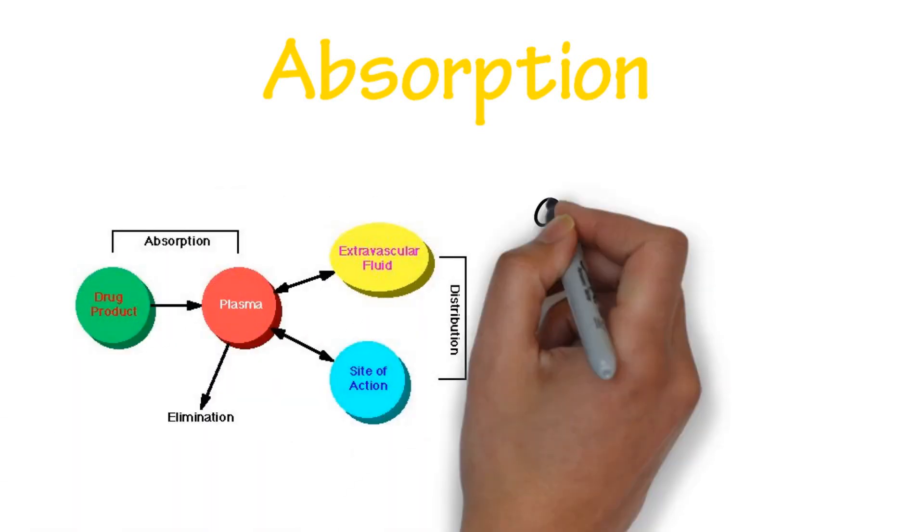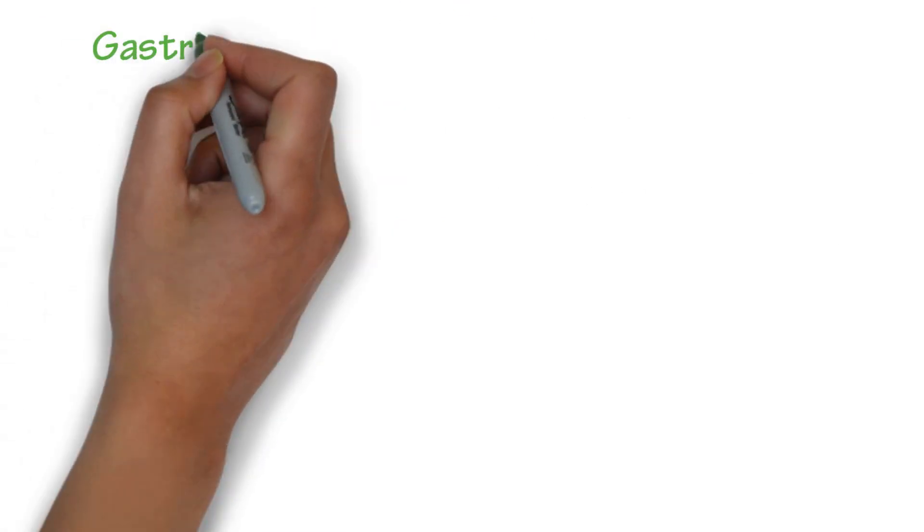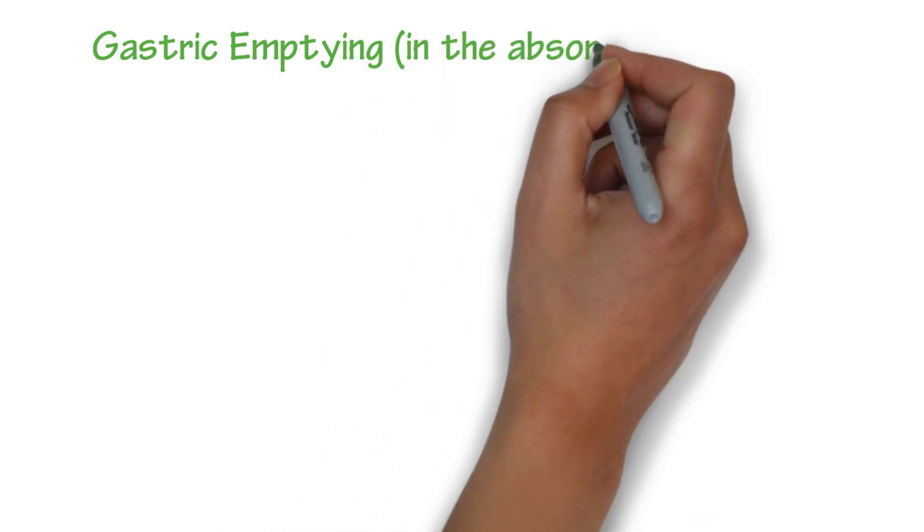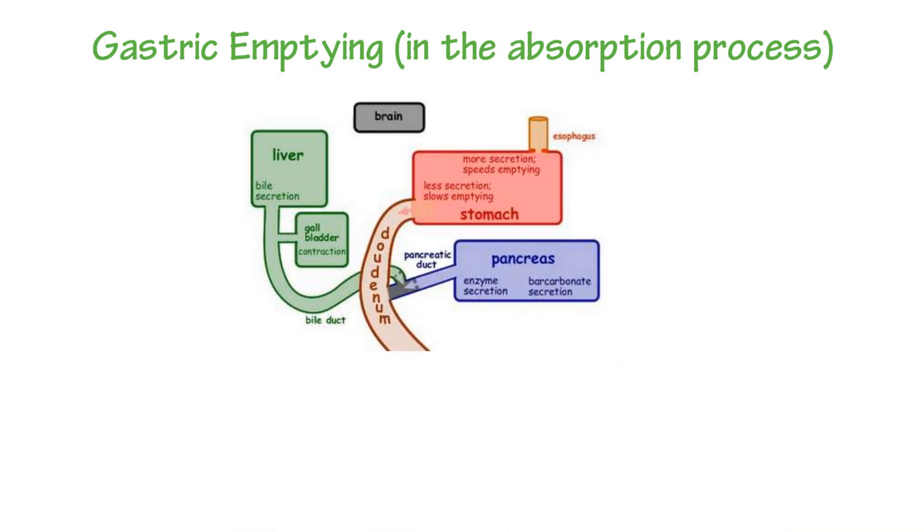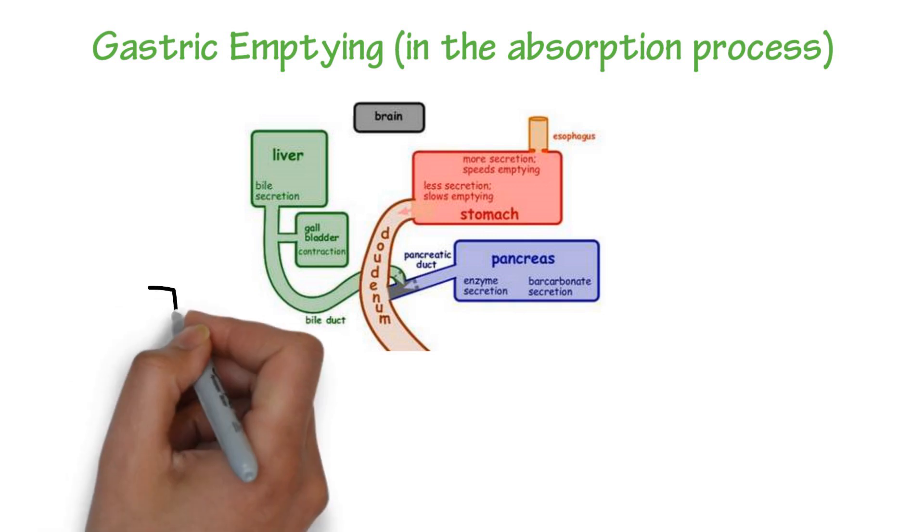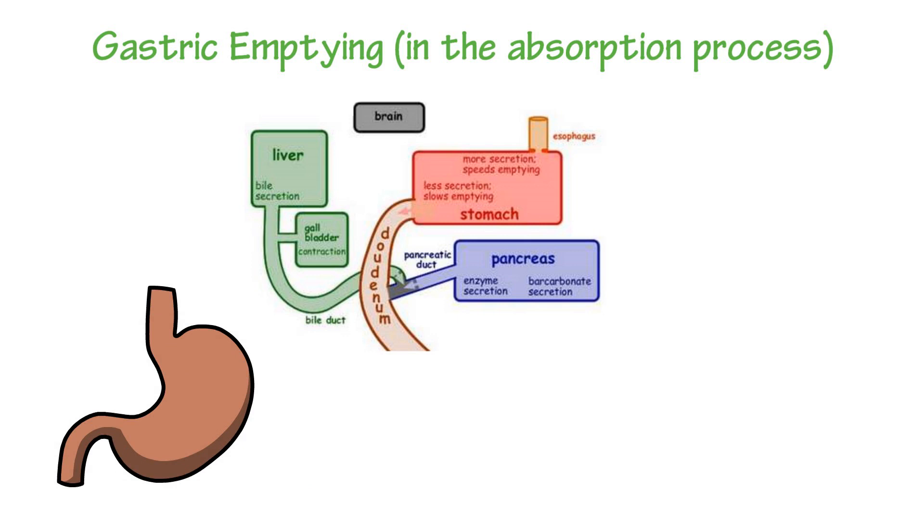Routes include oral, IV, IM, subcutaneous or sub-Q, and inhalation. Gastric emptying time is the time a drug will stay in the stomach before it's emptied into the small intestine. It is one of the primary factors affecting oral absorption. Why is this important? Stomach acid degrades drugs, which will affect a drug's action. If a drug is in the stomach too long, it can not only be degraded, but destroyed.